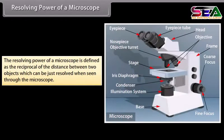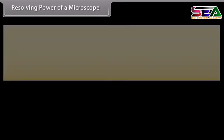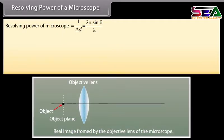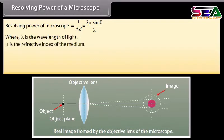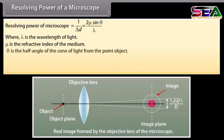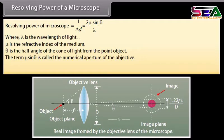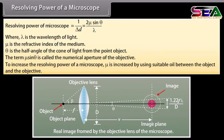Resolving power of a microscope. The resolving power of a microscope is defined as the reciprocal of the distance between two objects which can be just resolved when seen through the microscope. 1 upon delta d equals two mu sine theta upon lambda, where lambda is the wavelength of light, mu is the refractive index of the medium, and theta is the half angle of the cone of light from the point object. The term mu sine theta is called the numerical aperture of the objective. To increase the resolving power of a microscope, mu is increased by using suitable oil between the object and the objective.